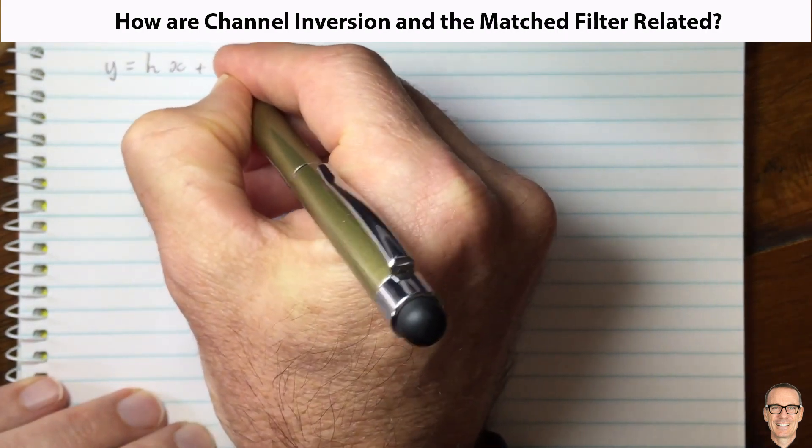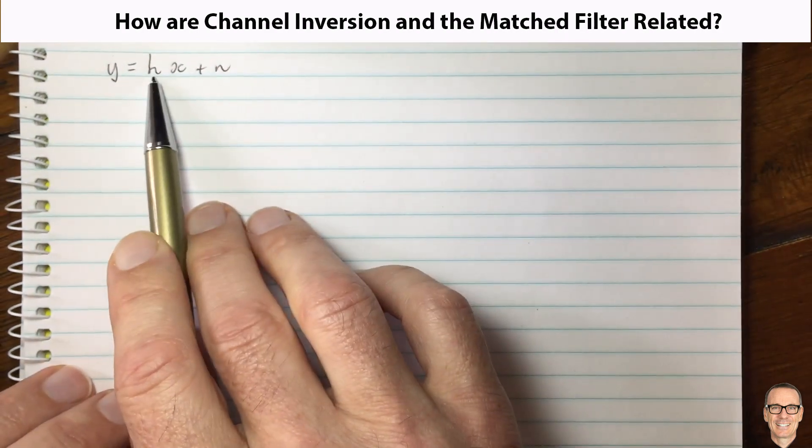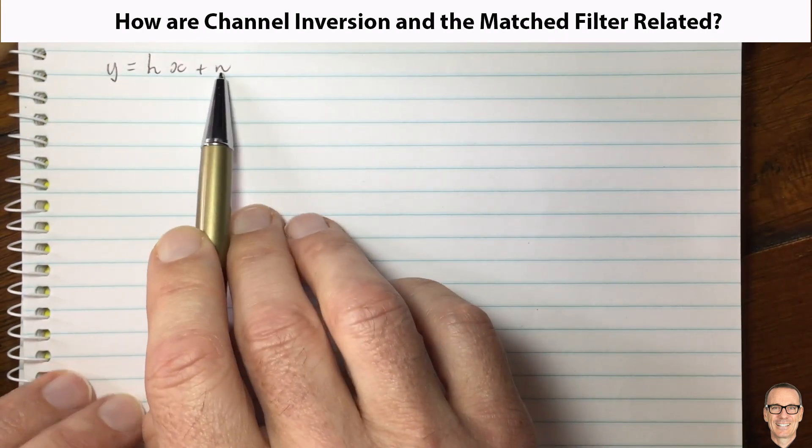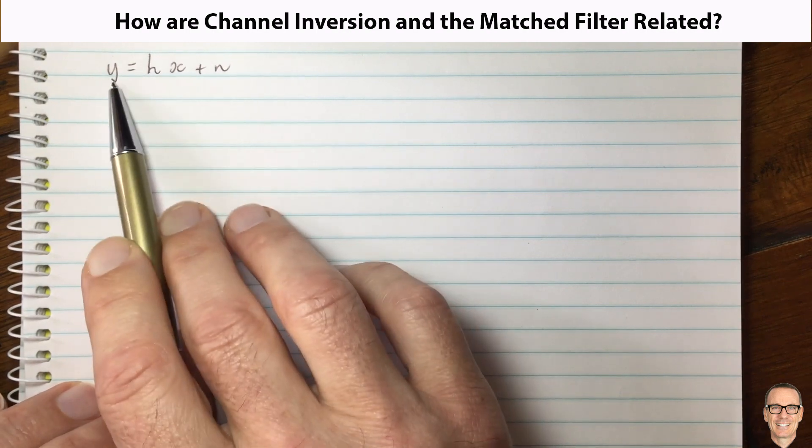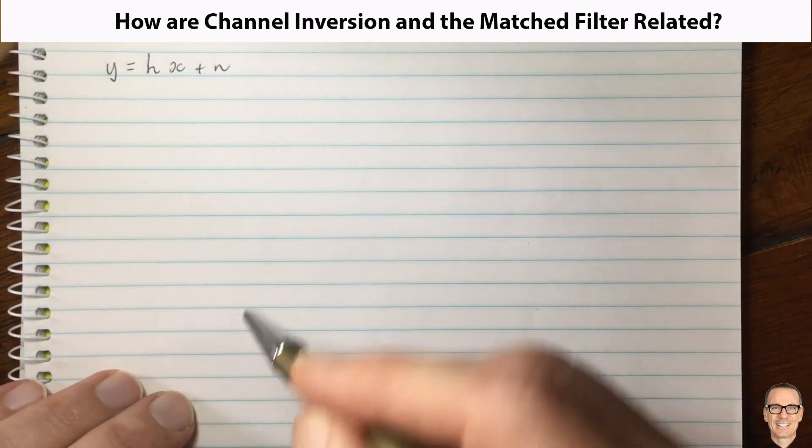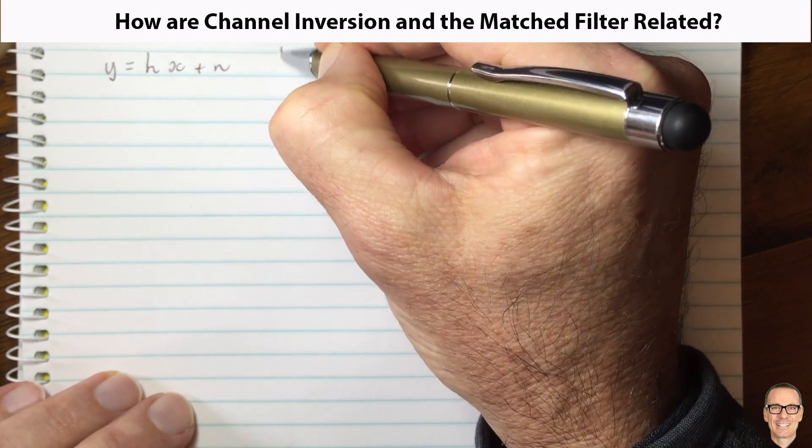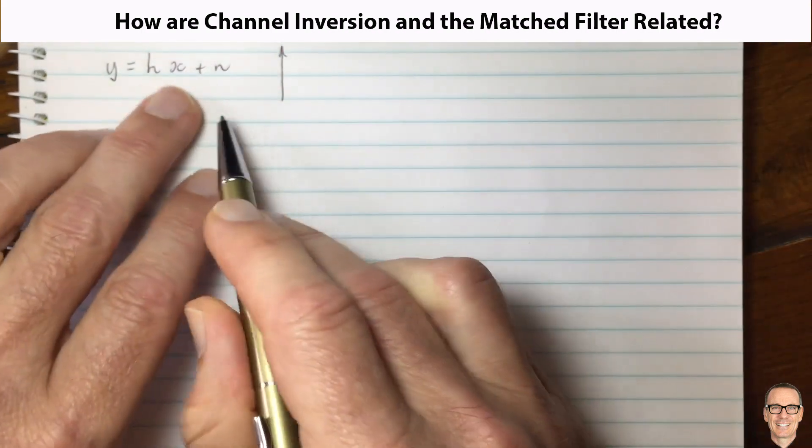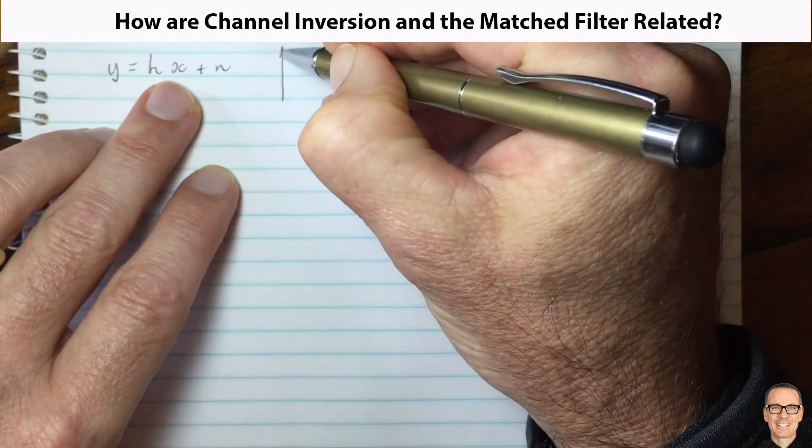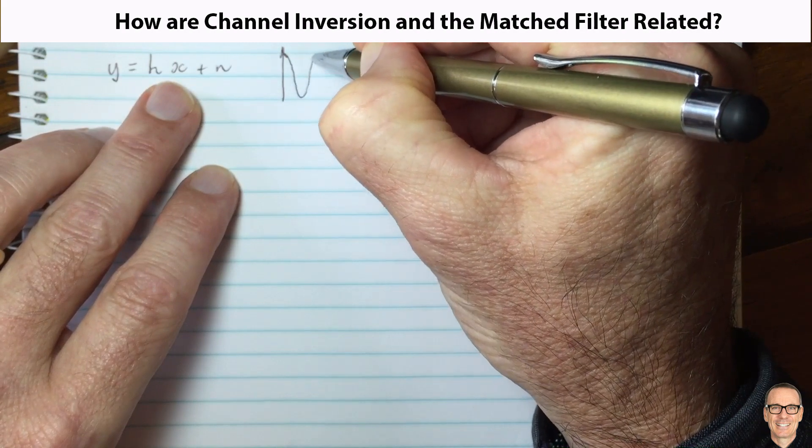A modulated symbol going into a channel and then noise is in the receiver, so this is our received measurement. I always like to think about this in terms of waveforms. So x, for example, if we were doing BPSK, then you'd have a cos waveform for the positive one.